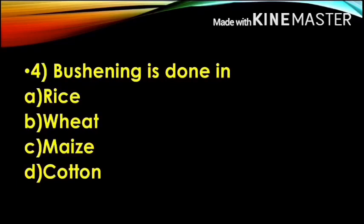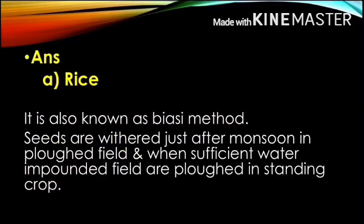Next question: Bushing is done in — Option A, rice; Option B, wheat; Option C, mace; and Option D, cotton. Bushing is done in Option A, rice. The bushing method is also called the bias method. This bushing method is used in rice.